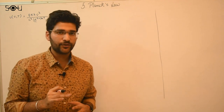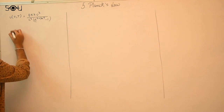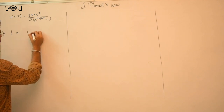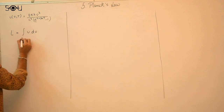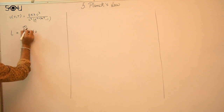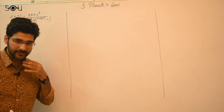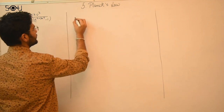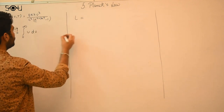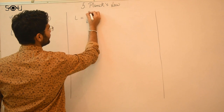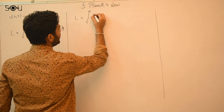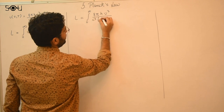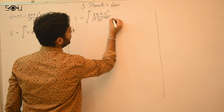Then we integrate over the entire electromagnetic spectrum, so the total luminosity is given by integrating the energy density over all frequencies from 0 to infinity. So total energy output L equals the integral from 0 to infinity of Planck's radiation law: 8πhν³ over c³ times (e^(hν/kT) − 1) dν.